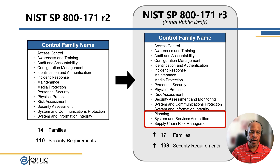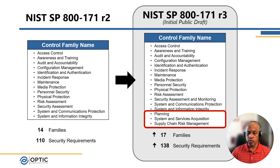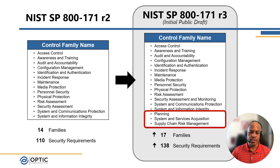There are three new families in the Revision 3 draft: planning, systems and services acquisition, and supply chain risk management. Those are also in the 53 catalog moderate baseline, so they've been pulled over and tailored for 171. Another minor item: the security assessment domain control family still remains but has been renamed to security assessment and monitoring in this latest draft.